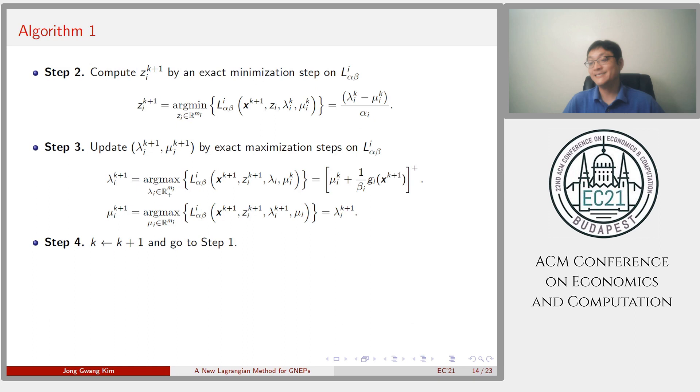Next step is to update z using exact minimization step on P-Lagrangian. Then, once minimization steps are done, multipliers are updated by exact maximization steps on P-Lagrangian.